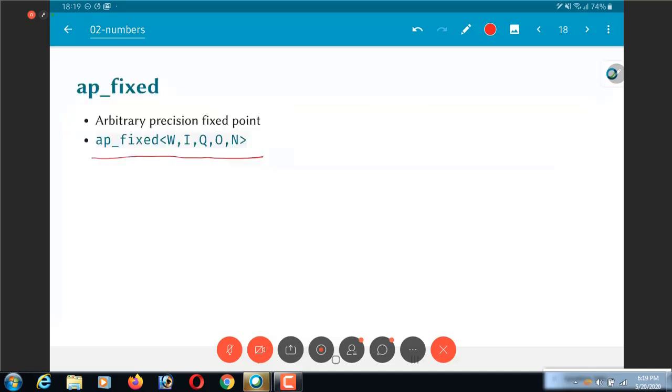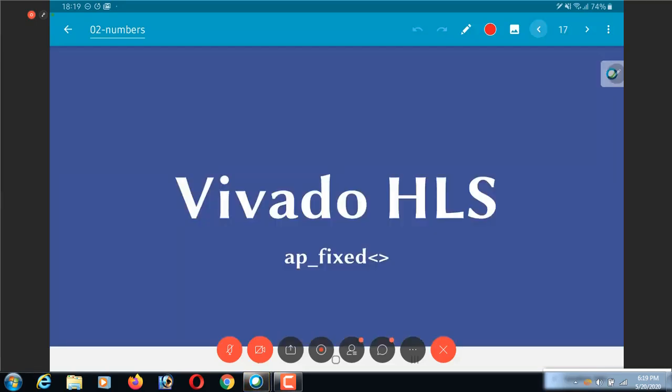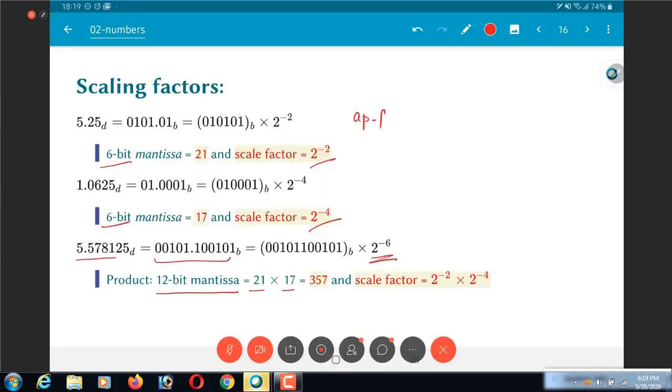So that for example in the previous case what I would have had would be that this would for example be AP_fixed of total number of bits is 6, number of integer bits is 4.